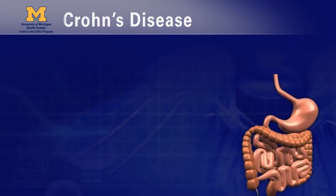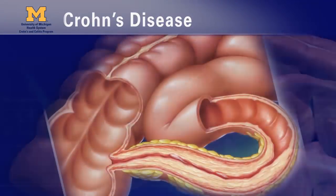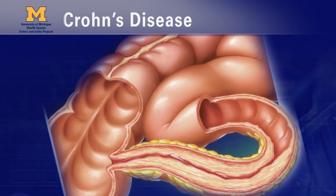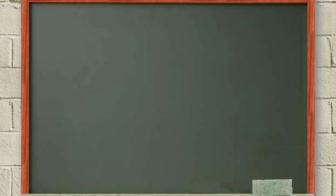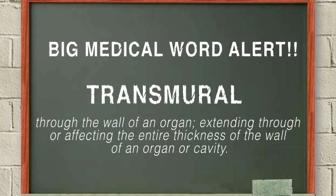Crohn's disease causes inflammation throughout the entire thickness of the wall of the GI tract, affecting all of the layers of the wall. Because it goes across the whole wall, Crohn's is called a transmural disease. Crohn's disease can cause inflammation in any segment of the GI tract, from the mouth to the anus.